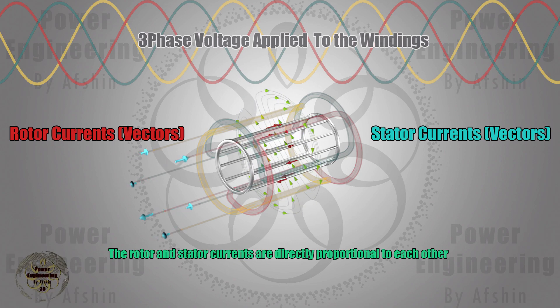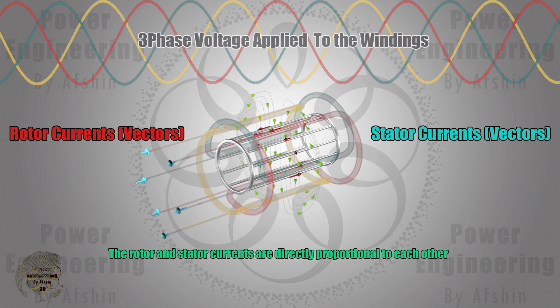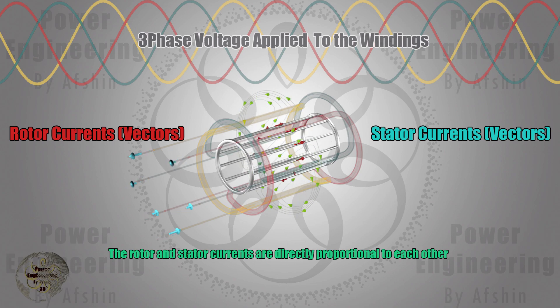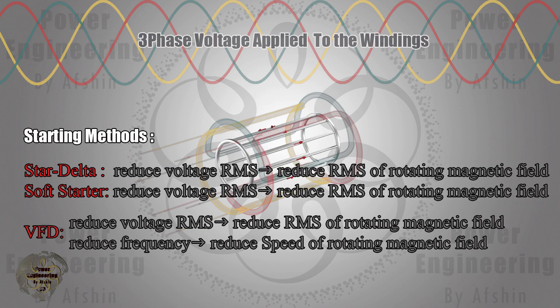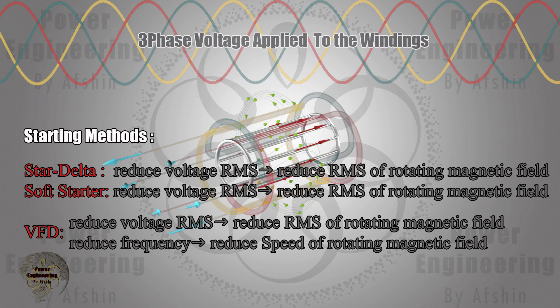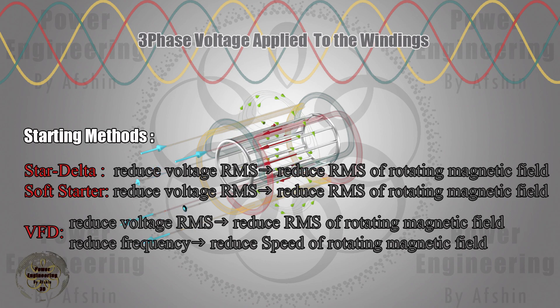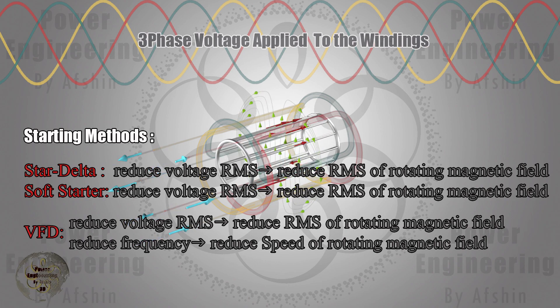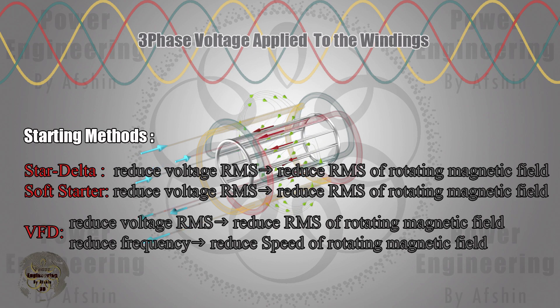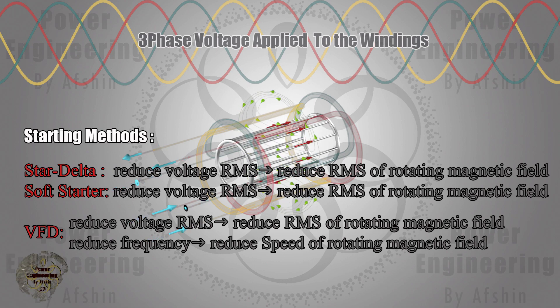Finally, let's examine why starting methods like star delta, soft starters, and VFDs reduce starting current. Starting current depends on two factors: flux magnitude and the rate of flux change. Flux magnitude can be adjusted by controlling the input voltage and the rate of flux change by controlling the source frequency.